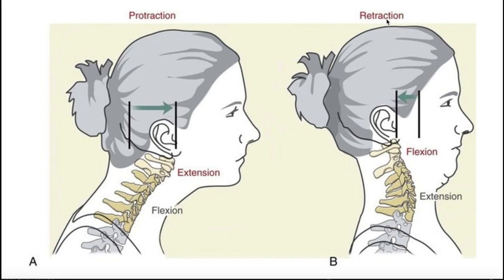In contrast, if you go into retraction — and you probably won't see someone just postured like this, it's more of an active movement — the upper cervical spine is now flexed, because those spinous processes and the posterior tubercle come further apart, whereas the lower cervical spine is now more extended, with all those spinous processes approximated.